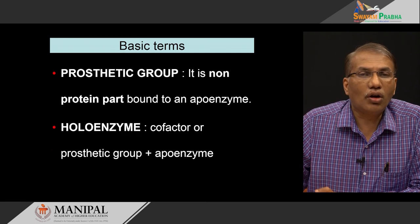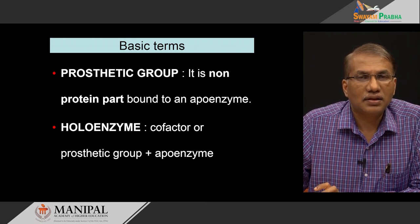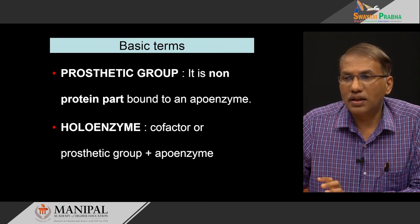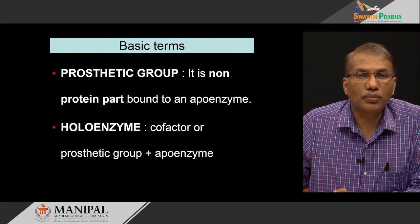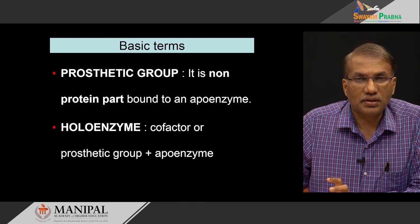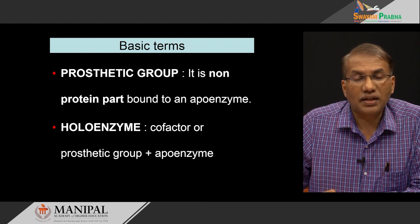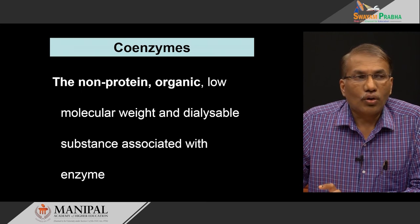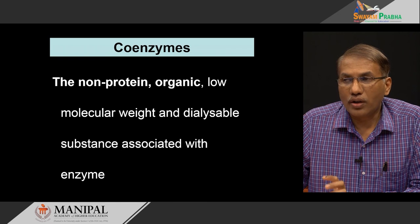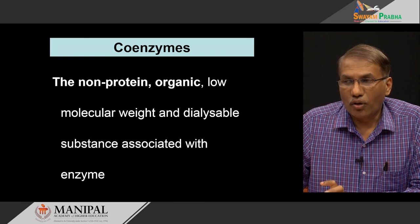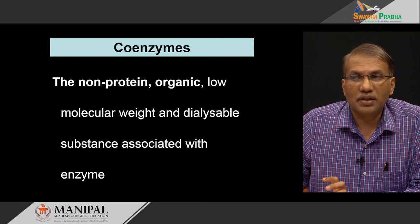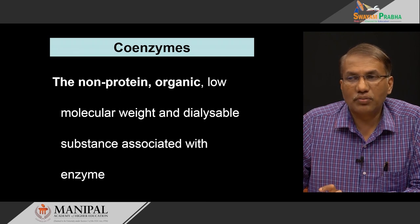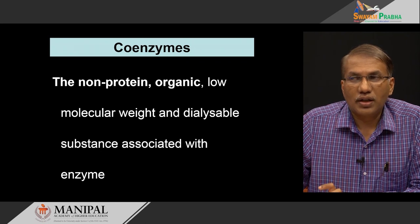Now comes the non-protein part. The non-protein part by and large is called the prosthetic group. This is a non-protein part bound to the apoenzyme. Together, the non-protein part which is the prosthetic group, along with the protein part which is the apoenzyme, they are called the holoenzyme, which is the catalytically functional part of the enzyme. Coming to the coenzyme: the non-protein, organic, low molecular weight compound which is a dializable substance associated with an enzyme is called a coenzyme. It is an organic molecule, low molecular weight, non-protein part.